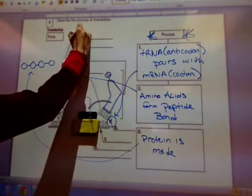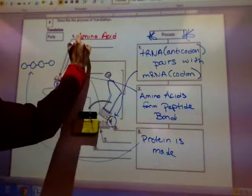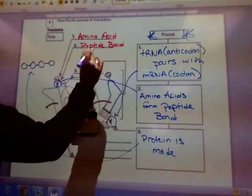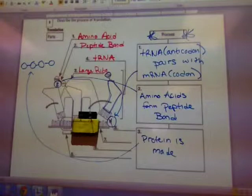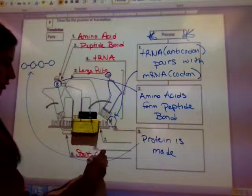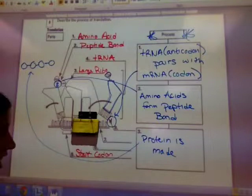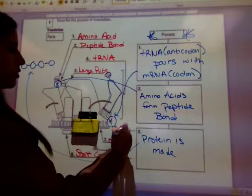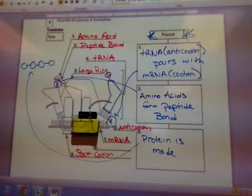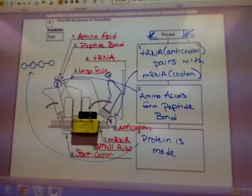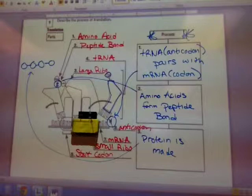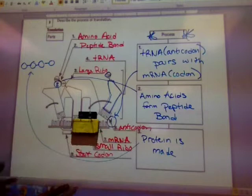This is the start codon or amino acid. This is the peptide bond. Three is the large ribosome. Four is the tRNA molecule. Five is pointing to the start codon. Seven is pointing to the mRNA. Eight is pointing to the anticodon. Now the mouse is in the way. Is six pointing to the codon itself? No, it's small ribosome.